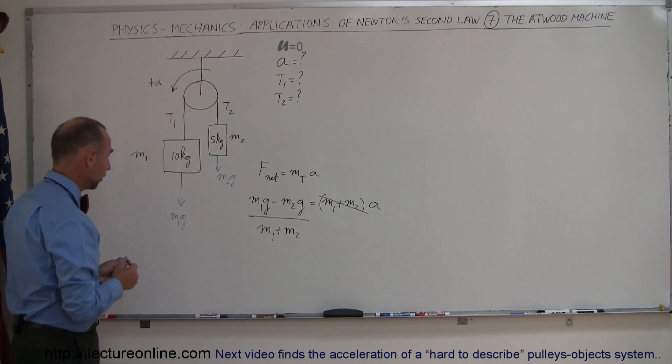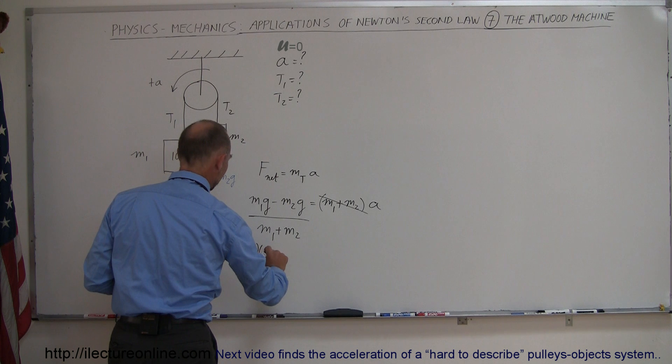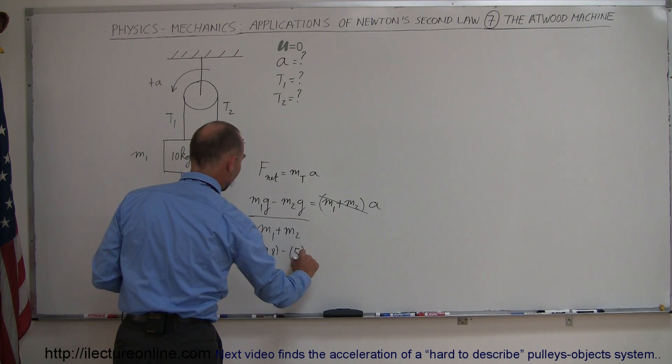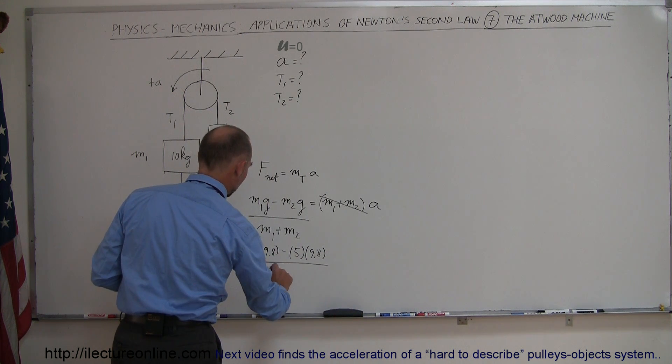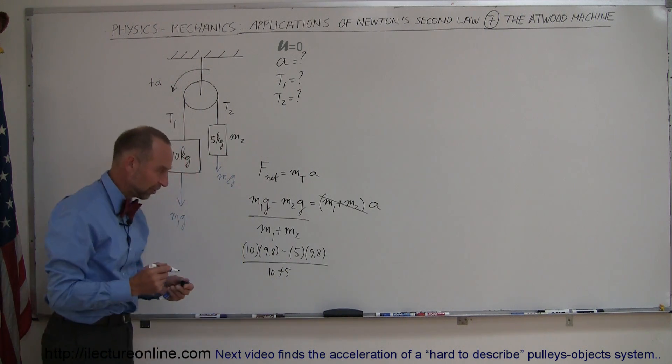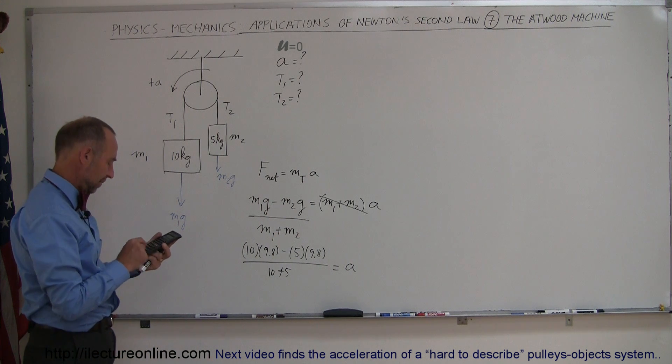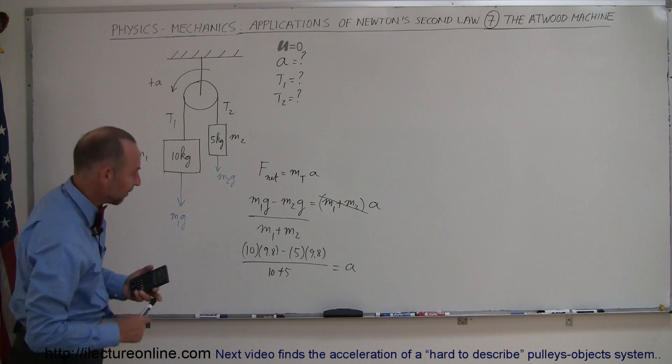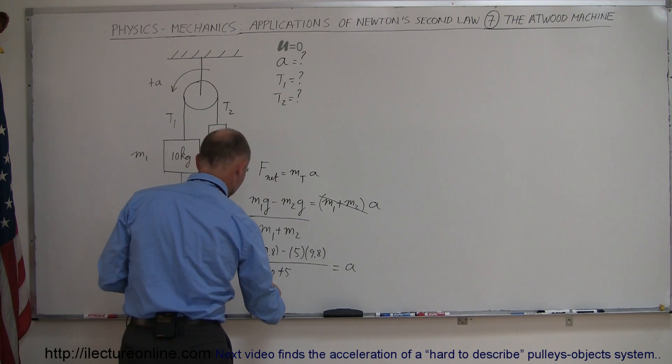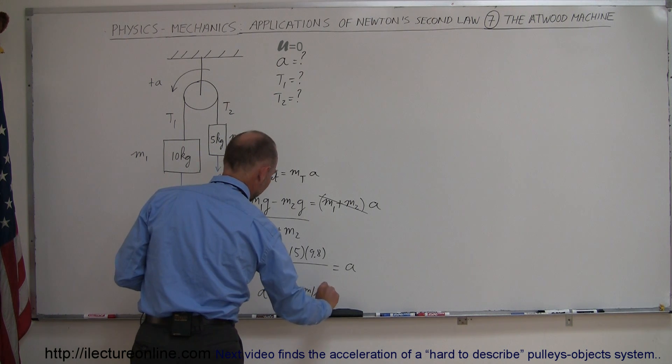Now let's plug in the numbers. So M1 is 10 times g 9.8 minus M2 which is 5 times g 9.8 all divided by M1 plus M2 which is 10 plus 5. And of course the units are going to be meters per second squared. This is the acceleration. And let's see here we have 49 divided by 15 which would be 3.27 meters per second squared.